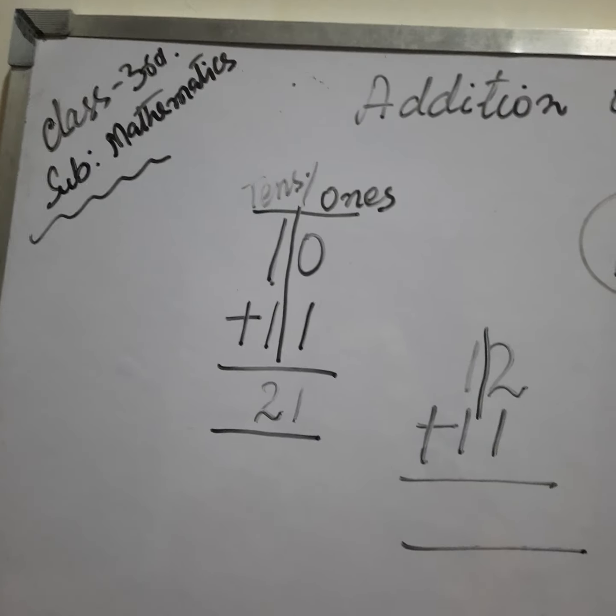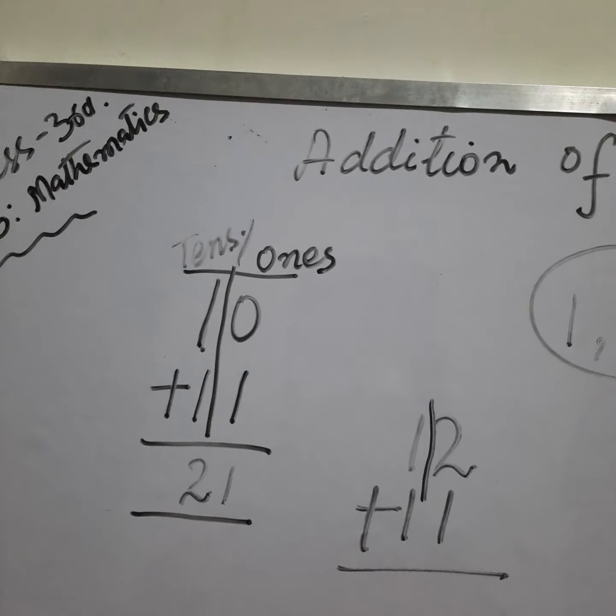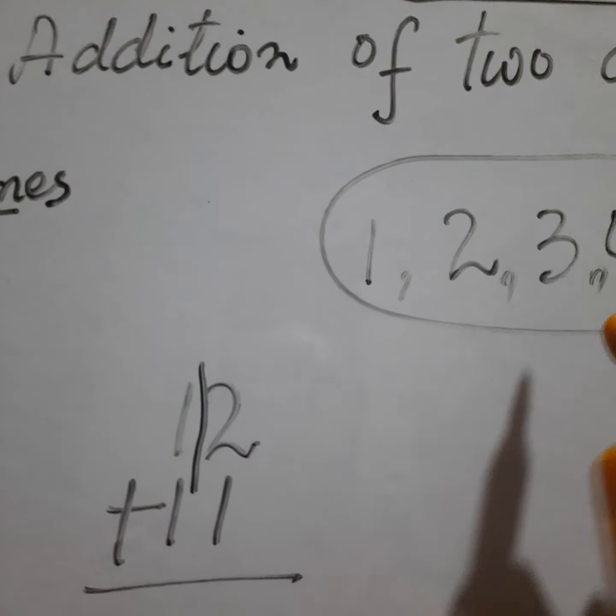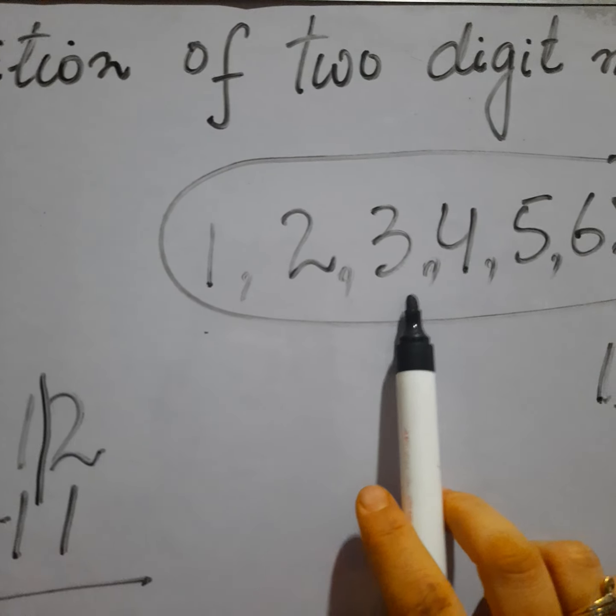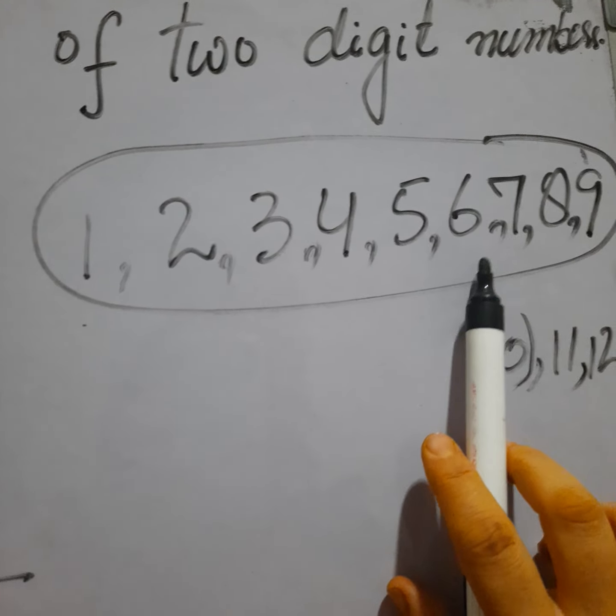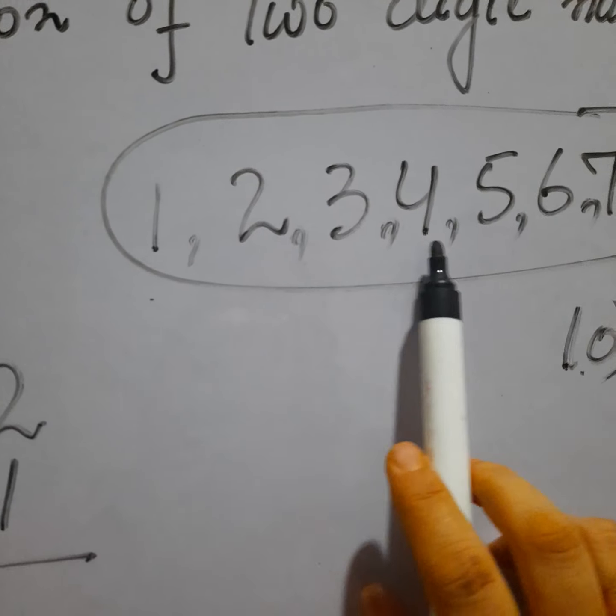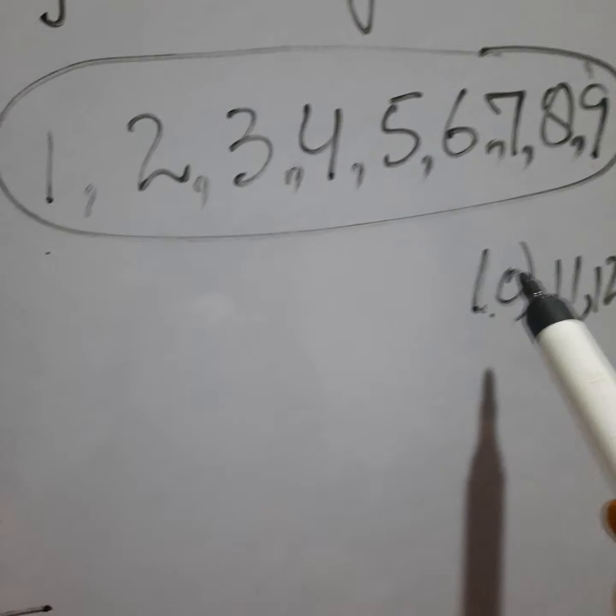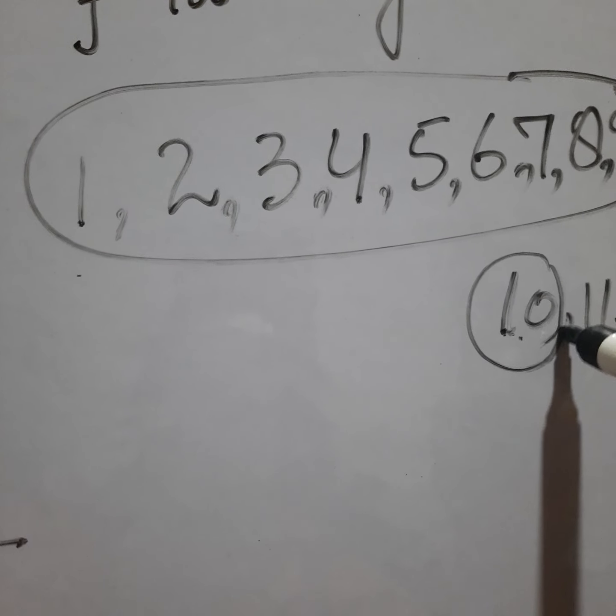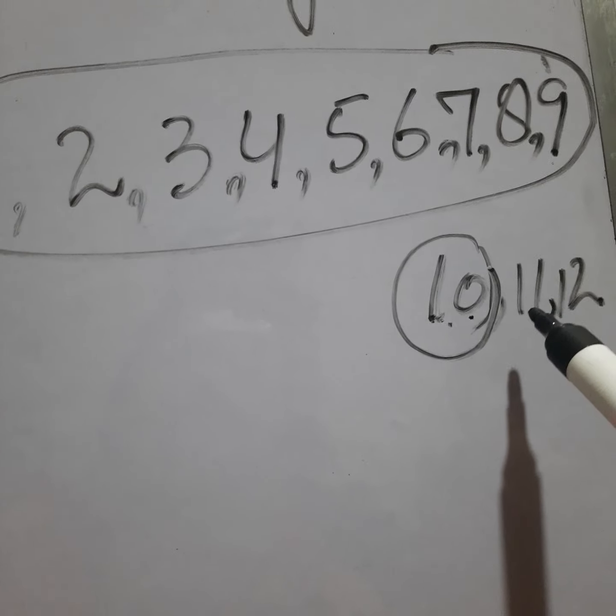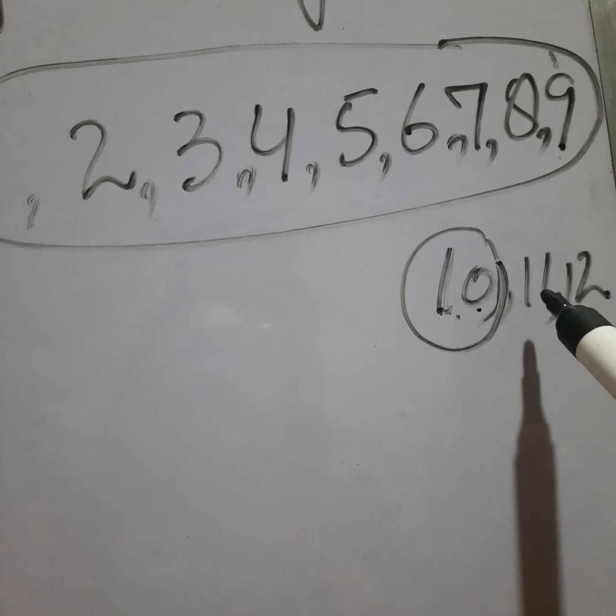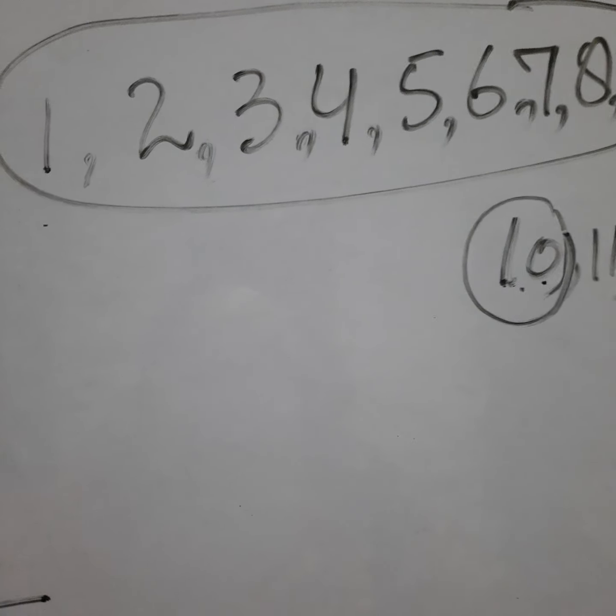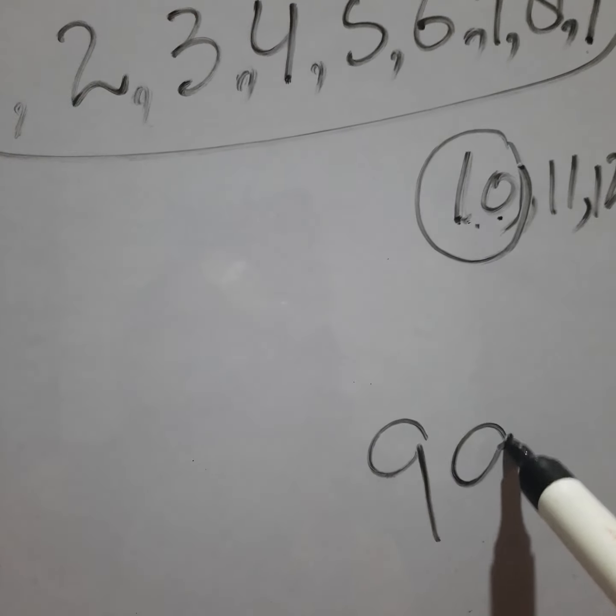Assalamualaikum. Mathematics lesson for us: addition of two digit numbers. One digit numbers are 1, 2, 3, 4, 5, 6, 7, 8, 9 - up to 9 is one digit. Then we have 10, which is one zero. That's two digits because it has ones place and tens place. Then 11, 12, 13, 14, 15, 16 up to 99 are all two digit numbers.